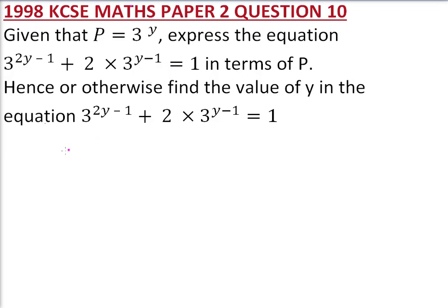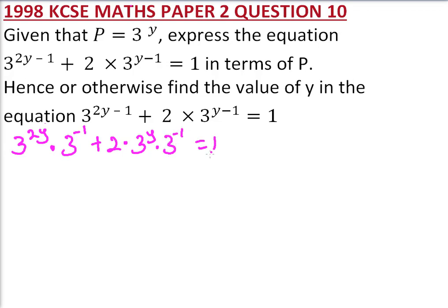So we start by reorganizing our equation so that we will be able to express it in terms of P. We write this as 3 to the power 2Y multiplied by 3 to the power negative 1 — we just separated that into a multiplication. This is 2 multiplied by 3 to the power Y multiplied by 3 to the power minus 1, equals 1.